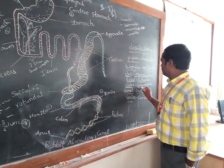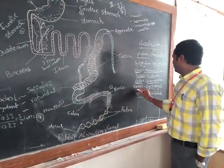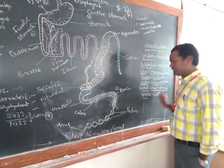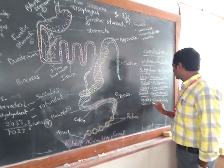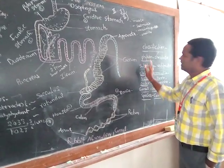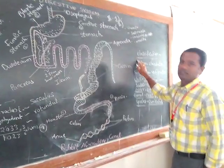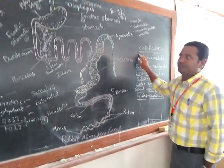Order: Lagomorpha. Genus: Oryctolagus. Species: Cuniculus. This is the classification of rabbit.